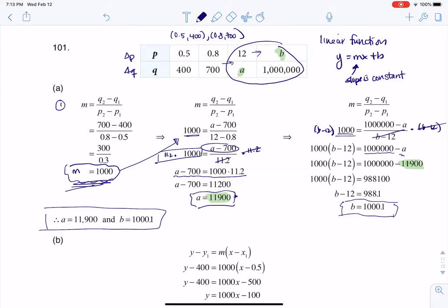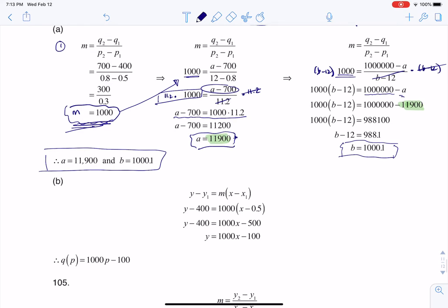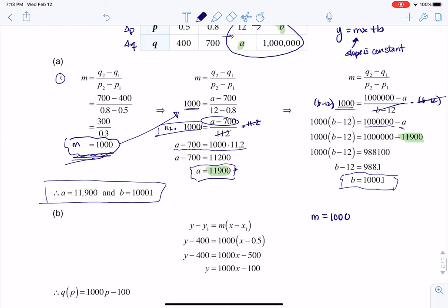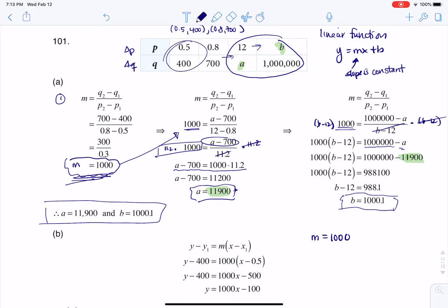Now for part b, it says to go ahead and write the linear function. Anytime you want to write a linear function, you need at least a point and a slope. I know that the slope is 1,000, and I can pick any of these ordered pairs. I'm going to pick the ones with the smallest numbers, but I could have picked any ordered pair—it doesn't matter.